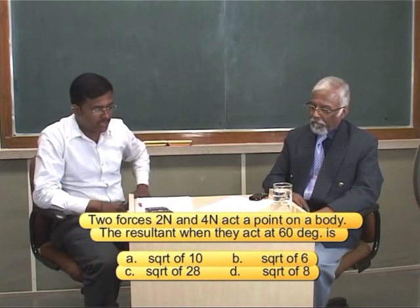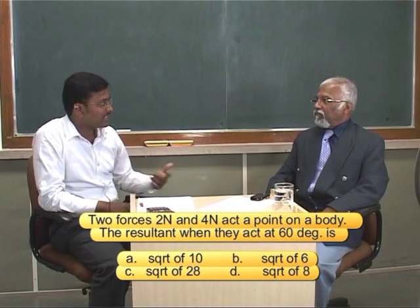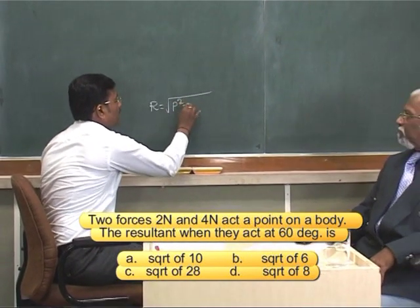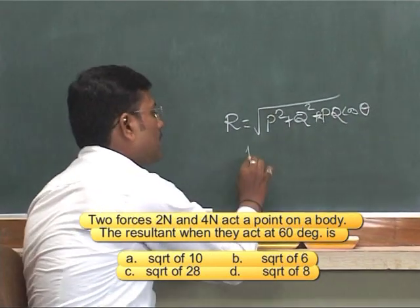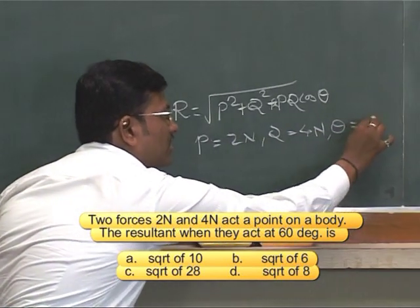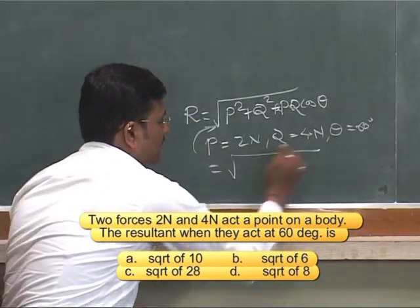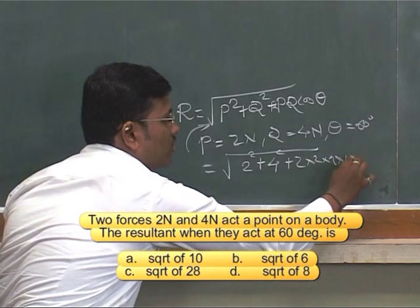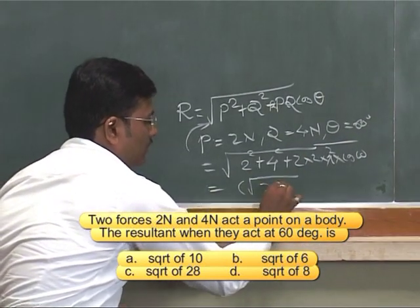So I think to solve this problem, we have to go for the theorem called the law of parallelogram theorem, which says the resultant of any force is given by the formula: root of P square plus Q square plus 2PQ cos theta. In this particular problem, P is nothing but 2N, Q is nothing but 4N, and theta is nothing but 60 degrees. When you substitute all these values, 2 square plus 4 square plus 2 into 2 into 4 into cos 60, that will give you cos 60 is nothing but half, so it will become the root of 28.